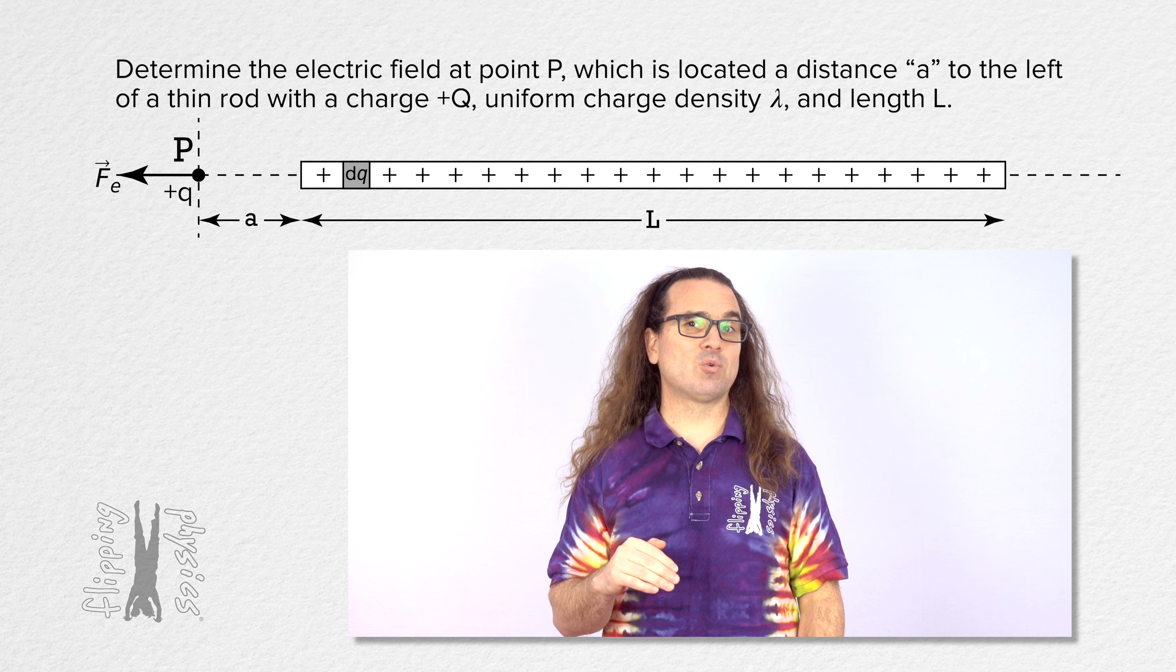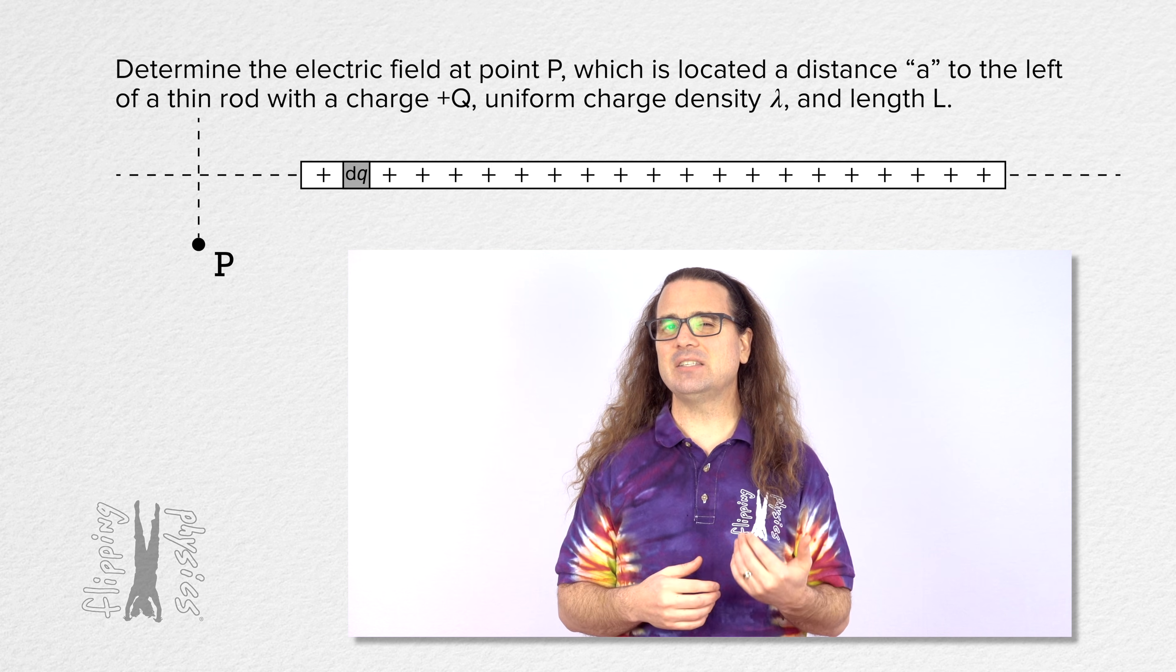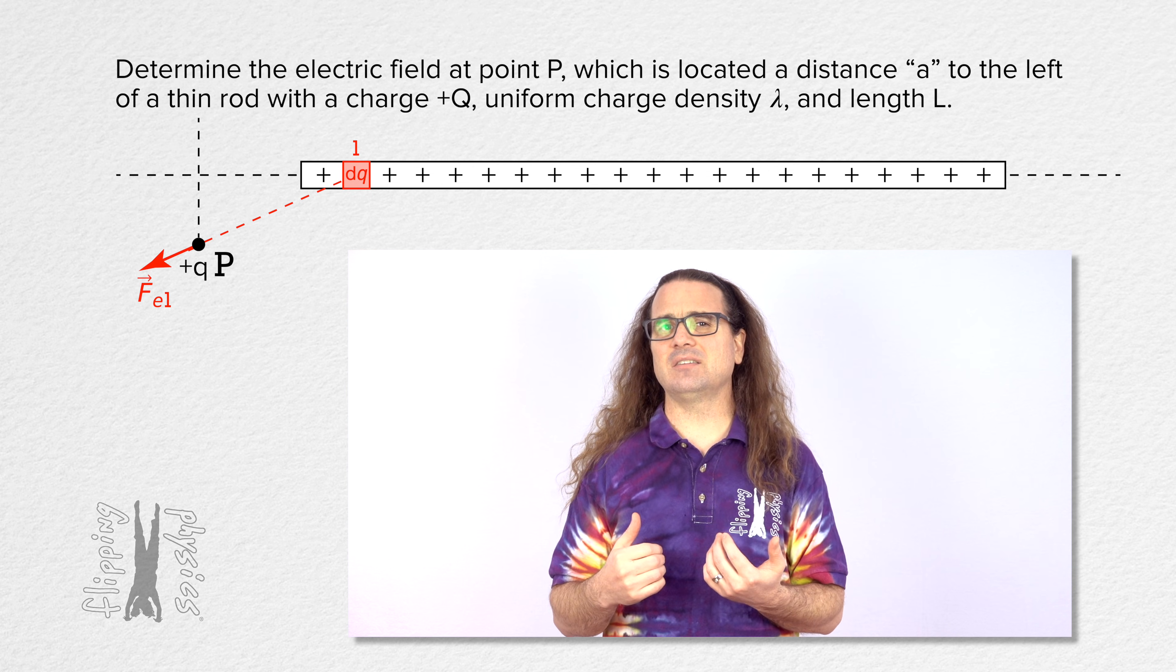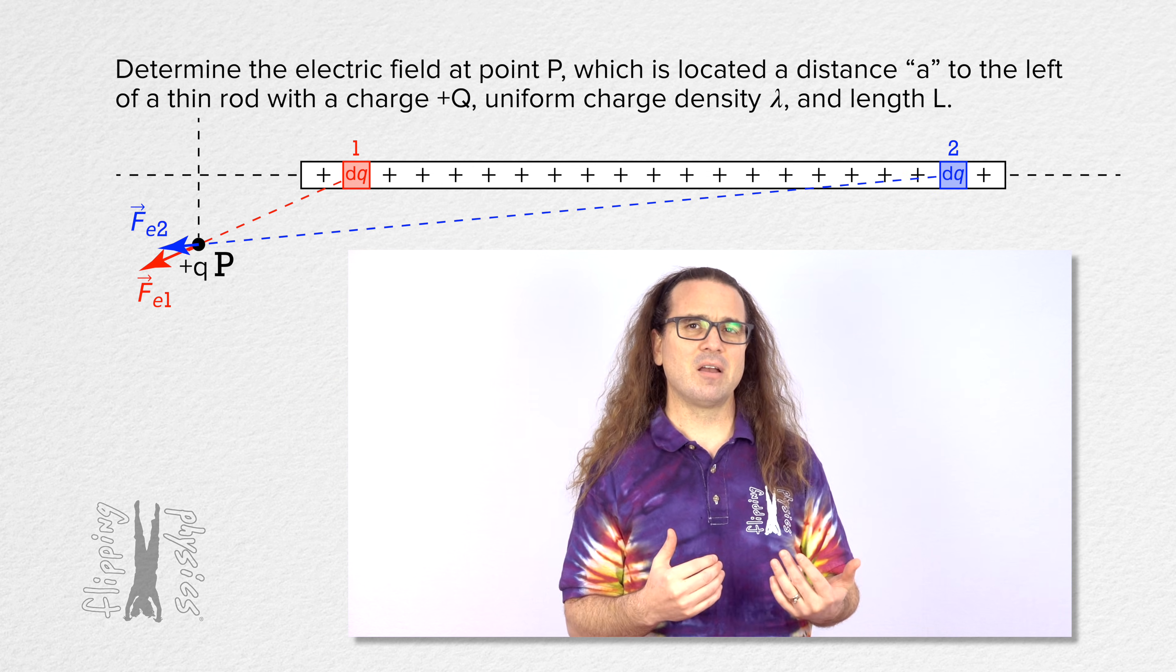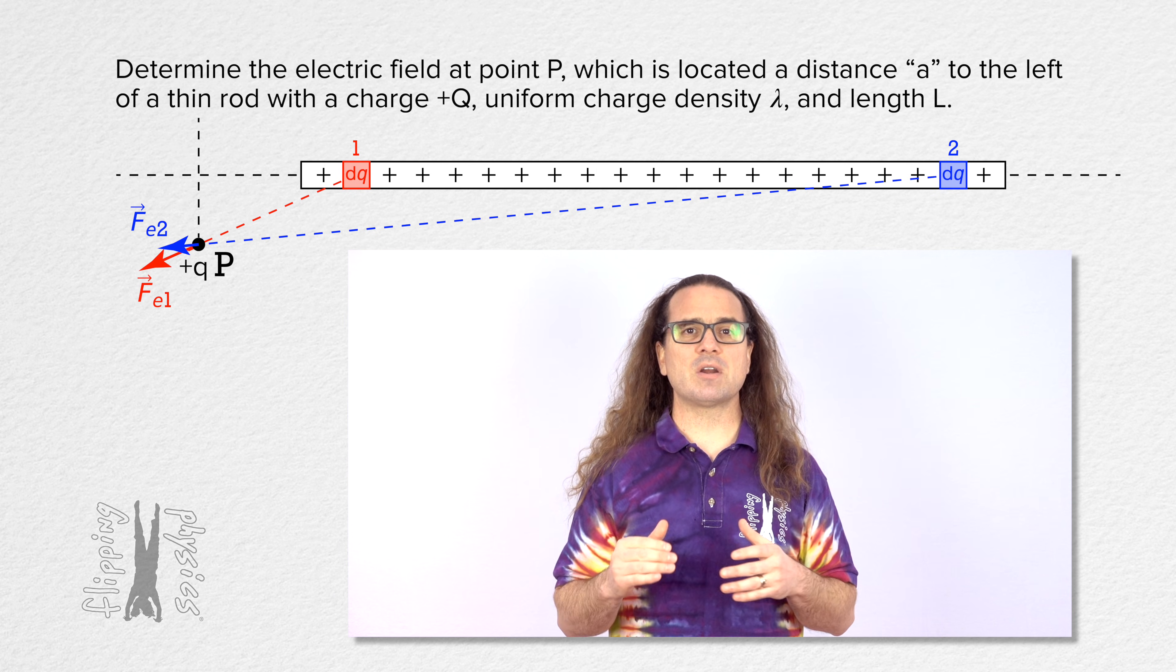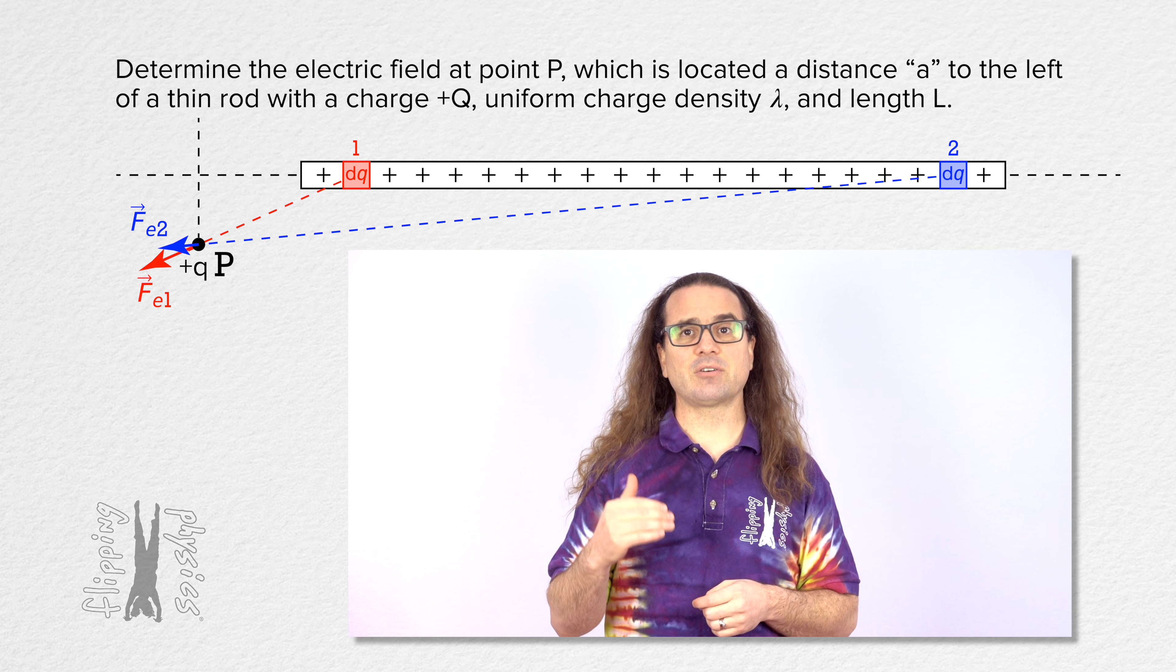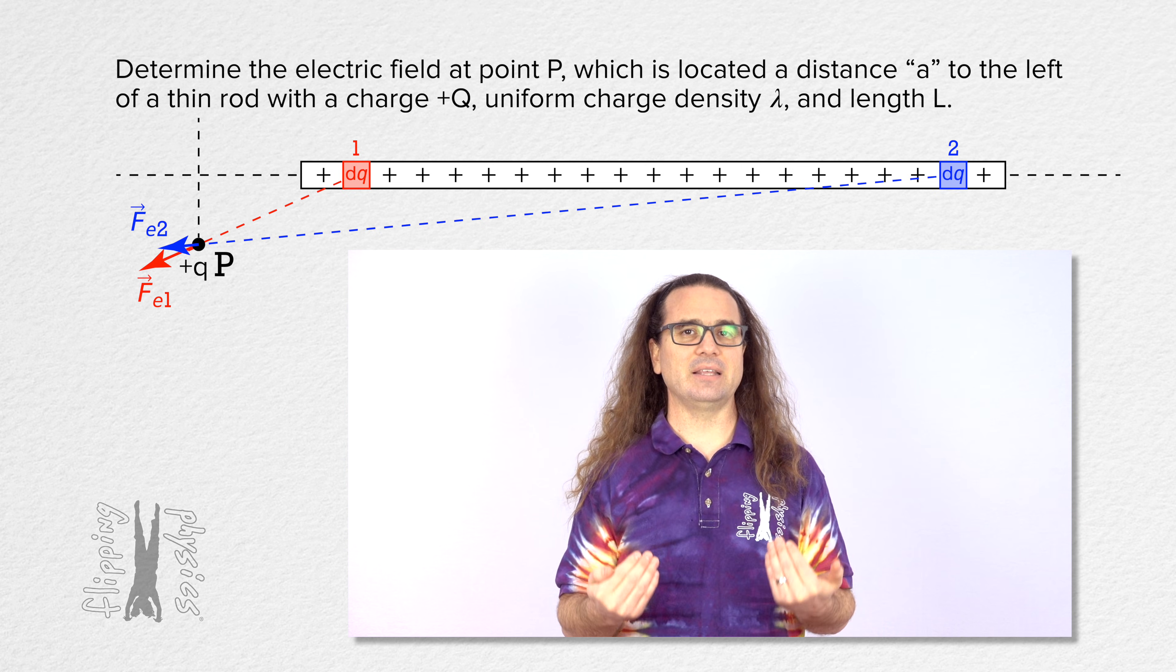However, if point P were not located on the axis of the thin rod, every dq would cause an electric field in a slightly different direction which would make this mathematically a much more difficult problem, and you are not responsible for finding the electric field relative to continuous charge distributions which are not highly symmetrical.